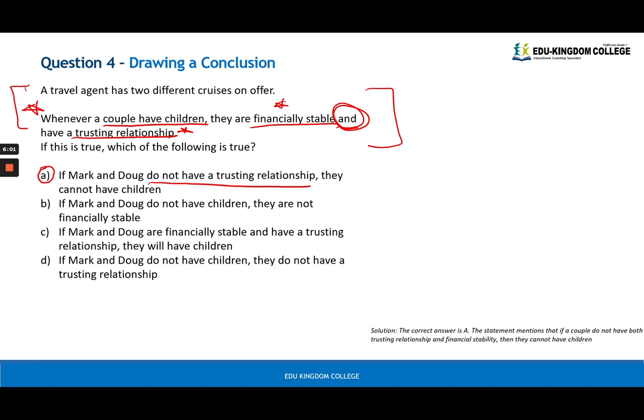Now that means B, C, and D are all incorrect. Let's look at B: if Mark and Doug do not have children they are not financially stable. So this is not definitely true, right? If Mark and Doug do not have children there might be other reasons. They might not be financially stable or they might not have a trusting relationship or it might be both, but this is possible. Therefore we can't definitively say that B is incorrect, and so on for C and D.